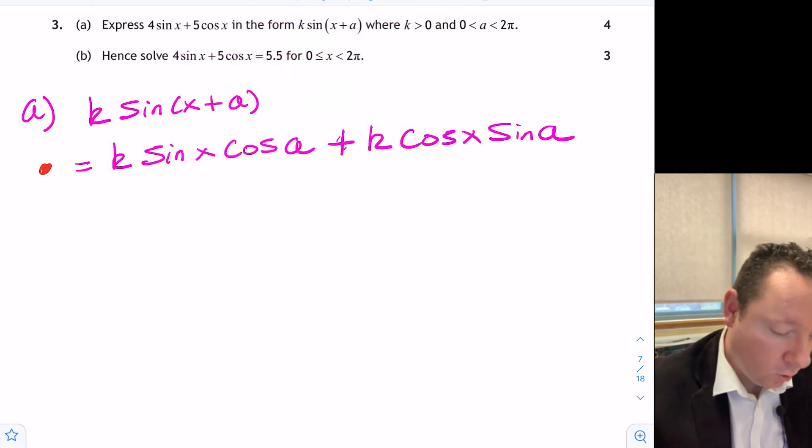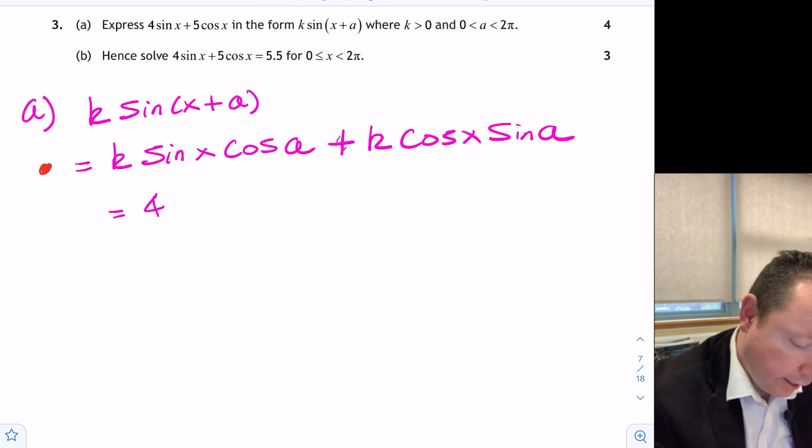We now need to compare the coefficients because we know that also equals 4 sin x plus 5 cos x. So we need to try and work out our k. If we look here, k sin x cos a plus k cos x sin a. So that implies that k times cos a must be 4 because you've got whatever's attached to the sin x. So we can write k cos a equals 4.